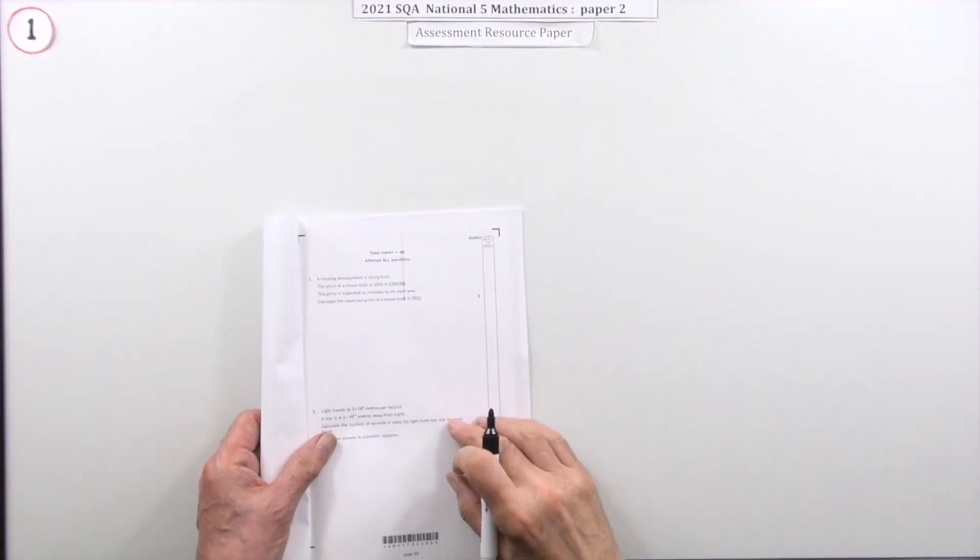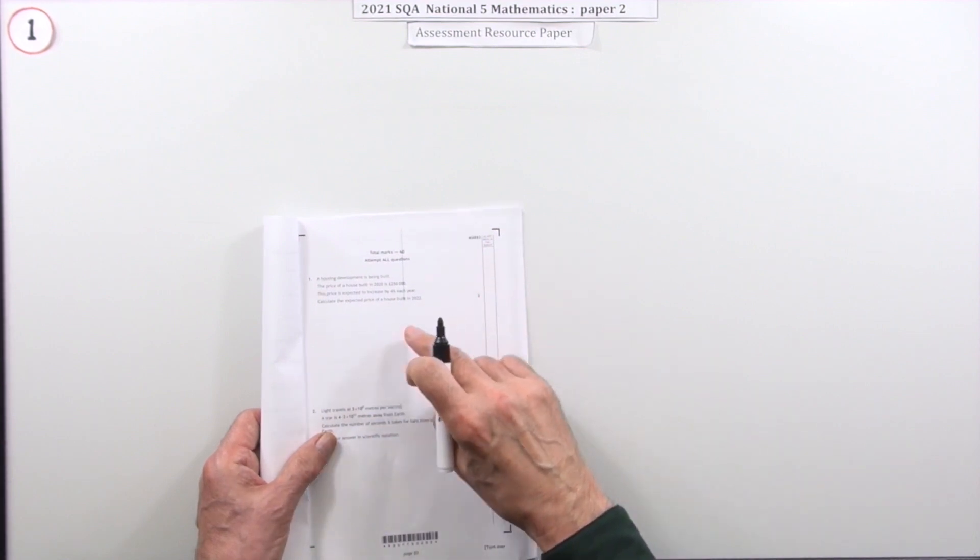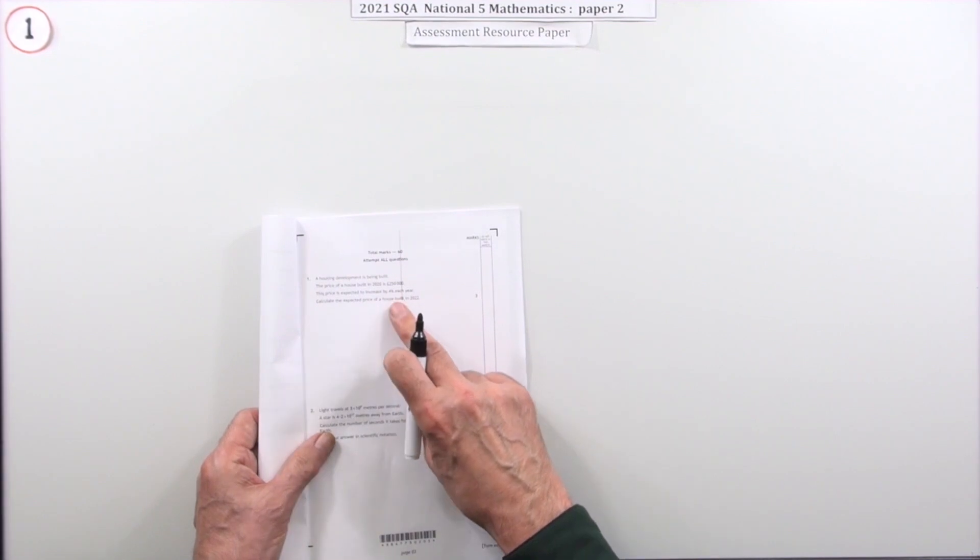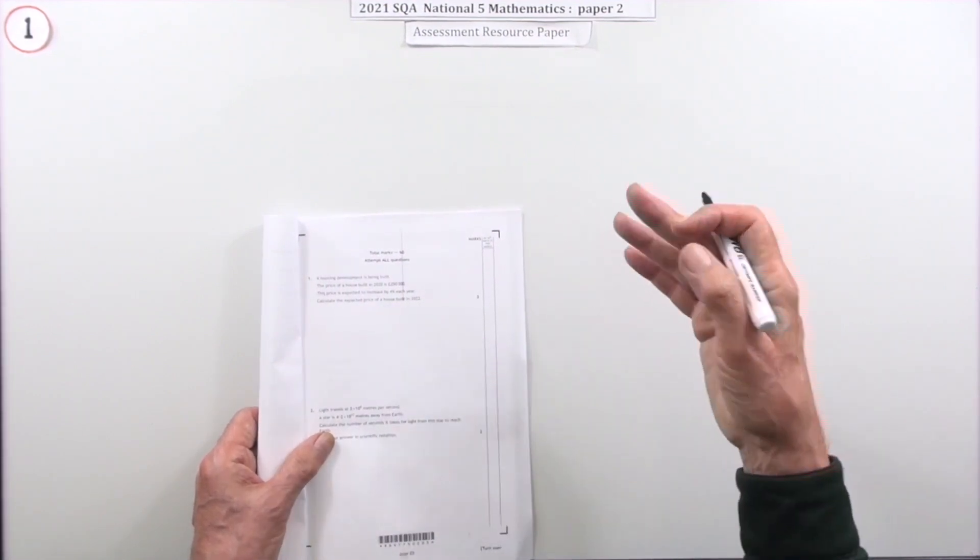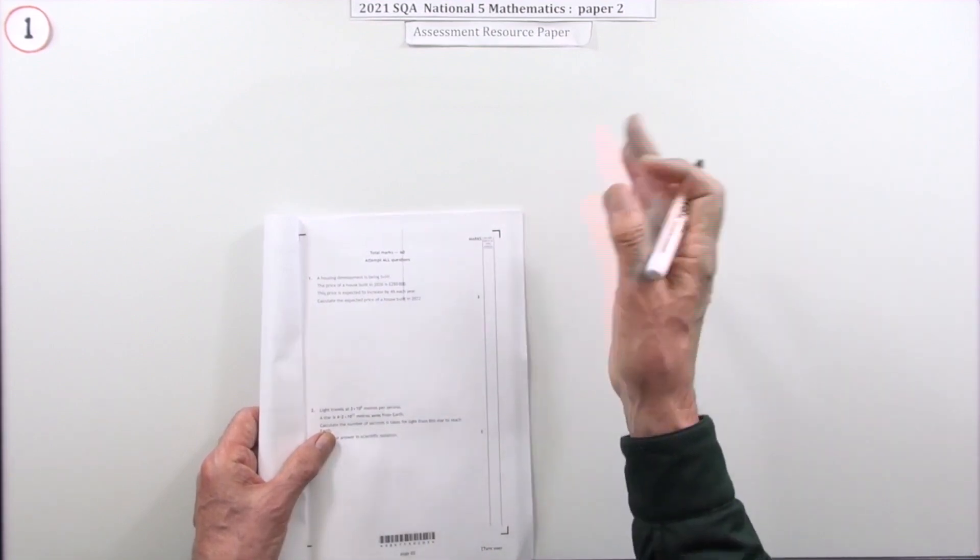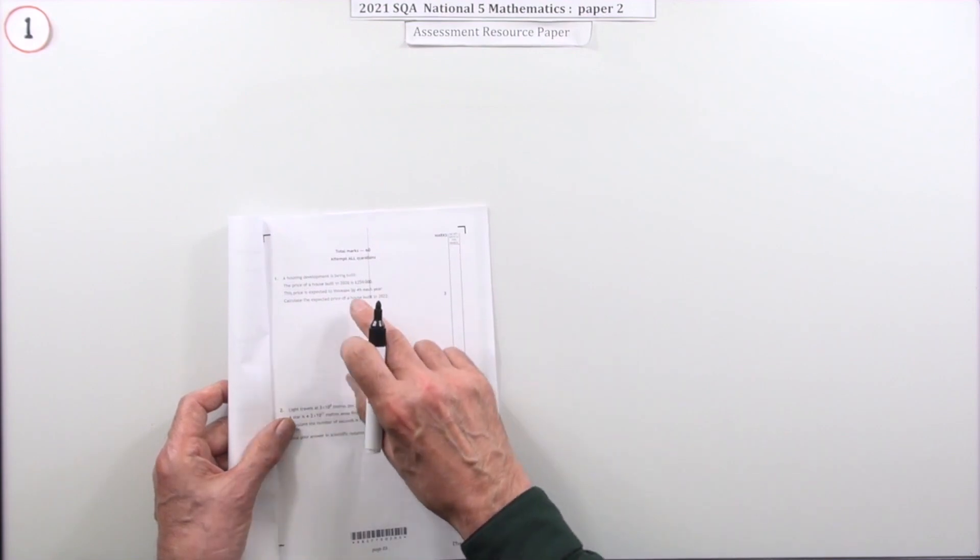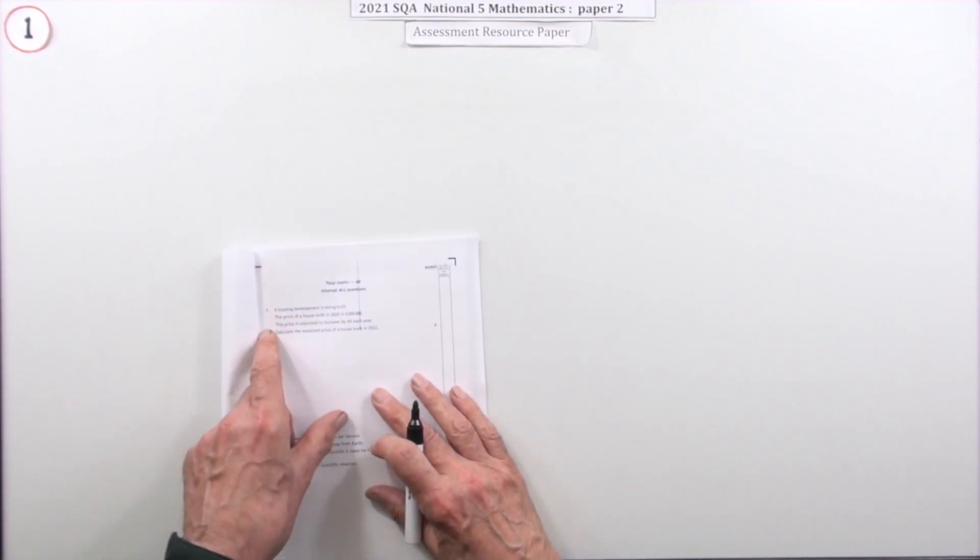Number one then, the first one in paper two of the 2021 National Five Maths, three mark question for that compound percentage increase. Again it's the standard, they just seem to do this all the time now. It's always a percentage increase and it's the same increase each year, whereas it could be varied so you'd have to have various factors you might multiply by, maybe some decreasing ones. But here it's just the same as usual.